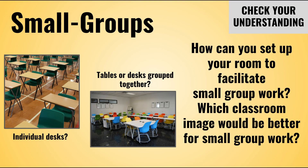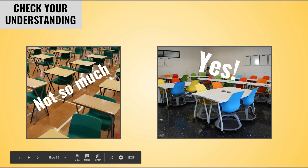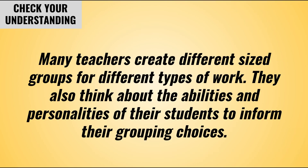Depending on your students and the content, you should group your students in groups of two to four. Think about the following preparation pieces for grouping: How can you set up your room to facilitate small group work? Seating arrangements that already have students grouped together make it easier to transition to frequent small group talk during lessons. If students have to move furniture every time you want them to talk, time will be lost during every transition. Please pause the video and click on the pop-up to link to a TeachHub article about a variety of grouping ideas. Think about: What grouping strategies or routines will you use to efficiently get students into groups? Many teachers create different sized groups for different types of work and think about the abilities and personalities of their students to inform their grouping choices.